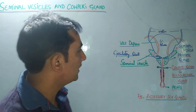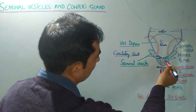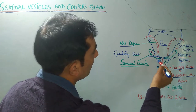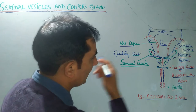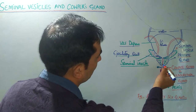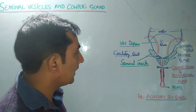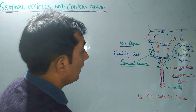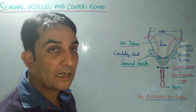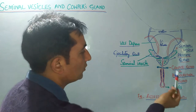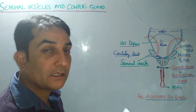Beneath the seminal vesicles is a gland which we call the prostate gland. The prostate gland is located beneath the seminal vesicles. The part of the urethra covered by the prostate gland is known as the prostatic urethra. The prostate is a single gland, whereas there are two seminal vesicles. Below the prostate gland there are Cowper's glands — small pea-shaped glands, one on either side, also known as the bulbourethral glands.